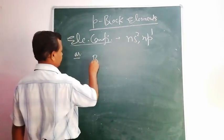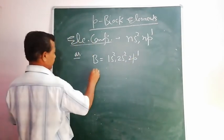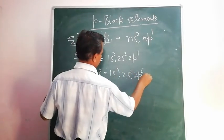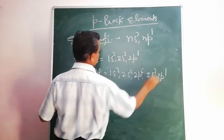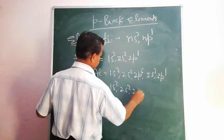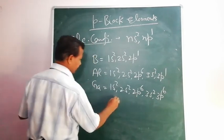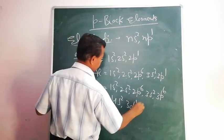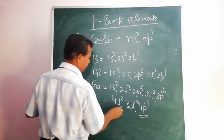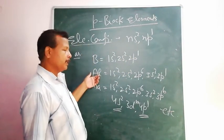For example, Boron: 1s², 2s², 2p¹. Aluminium: 1s², 2s², 2p⁶, 3s², 3p¹. Similarly, Gallium: 1s², 2s², 2p⁶, 3s², 3p⁶, 4s², 3d¹⁰, 4p¹. That is, all end in ns², np¹. Thus all these elements — Boron, Aluminium, Gallium, etc. — have the same type of electronic configuration, ending in p¹.